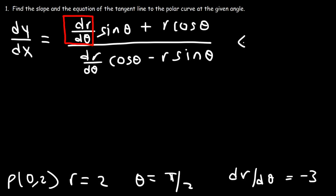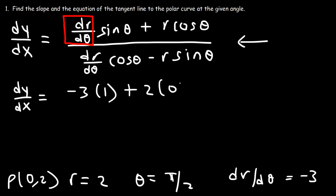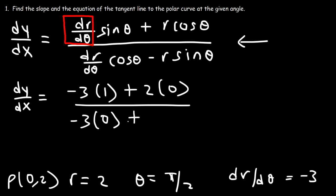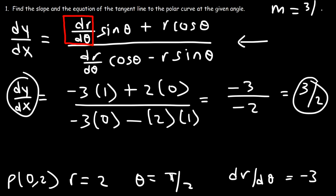Now let's plug everything into the formula to calculate dy/dx. The numerator: (dr/dθ)·sin(π/2) + r·cos(π/2) = (−3)(1) + (2)(0) = −3. The denominator: (dr/dθ)·cos(π/2) − r·sin(π/2) = (−3)(0) − (2)(1) = −2. So dy/dx = −3/−2 = 3/2. The slope is 3/2.